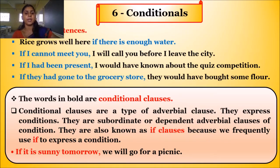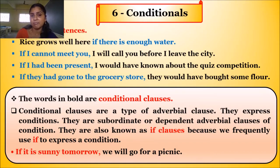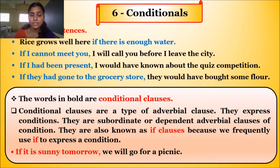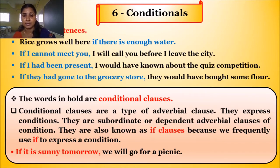Before entering the class directly — what is a conditional clause? In English grammar, conditionals are sometimes called 'if clauses.' Conditional clauses describe the result of something that might happen in the present or future, or something that might have happened in the past. These conditions are made using different verb tenses.